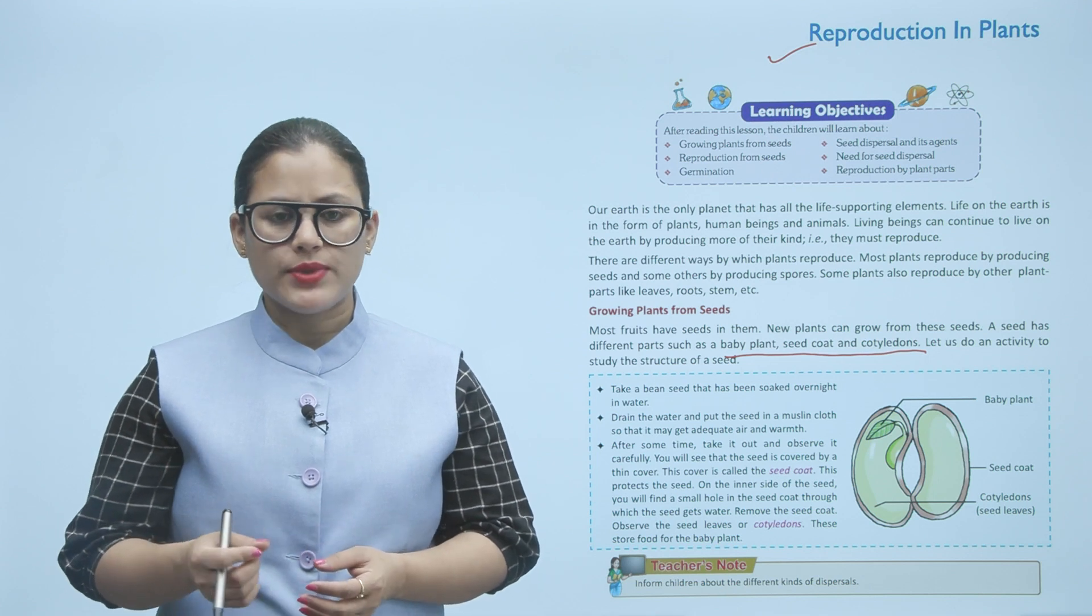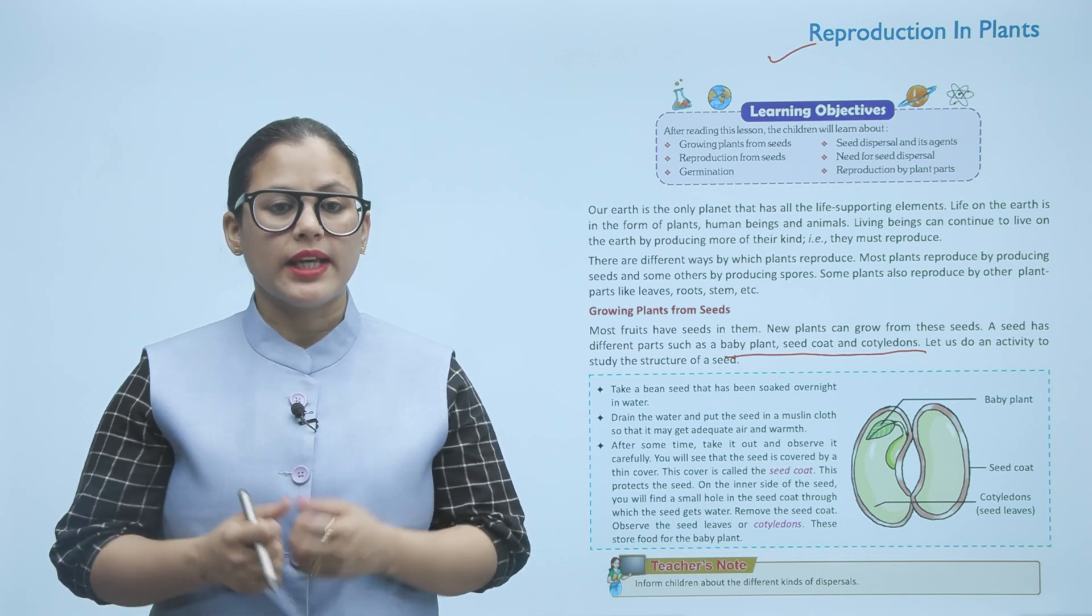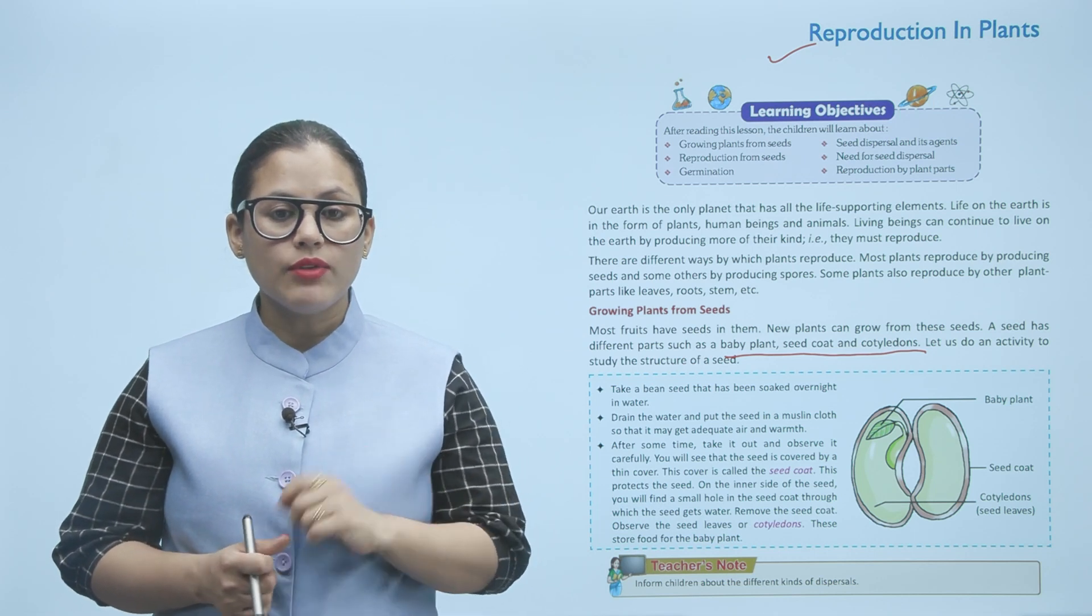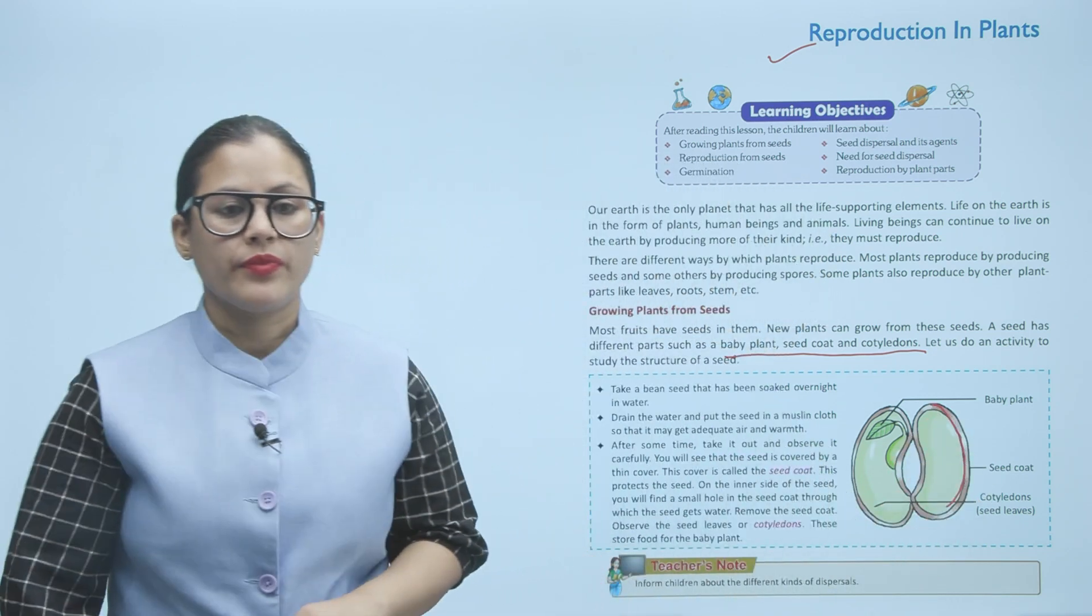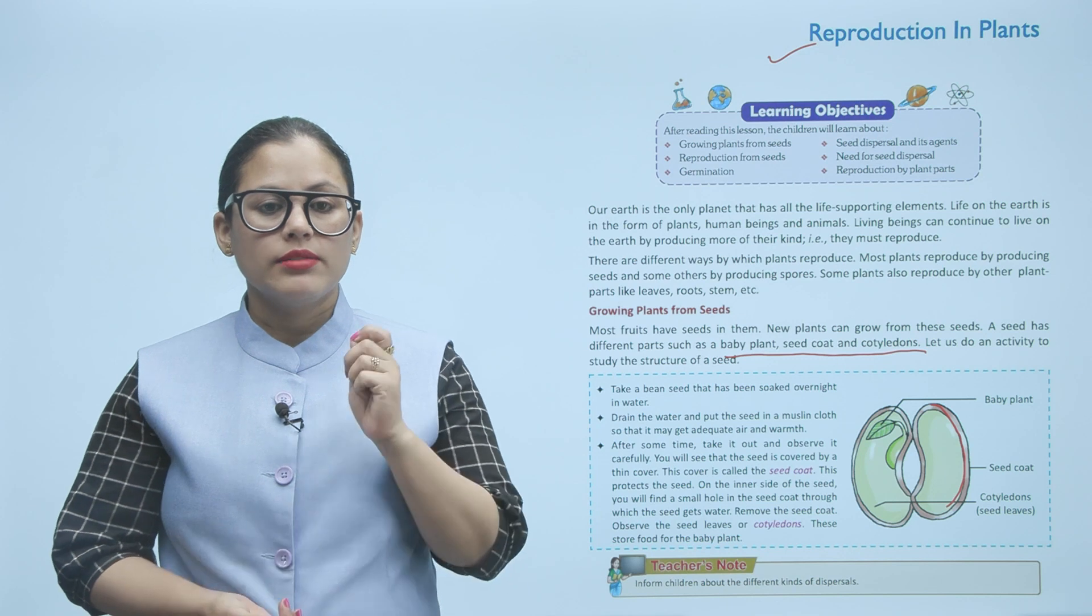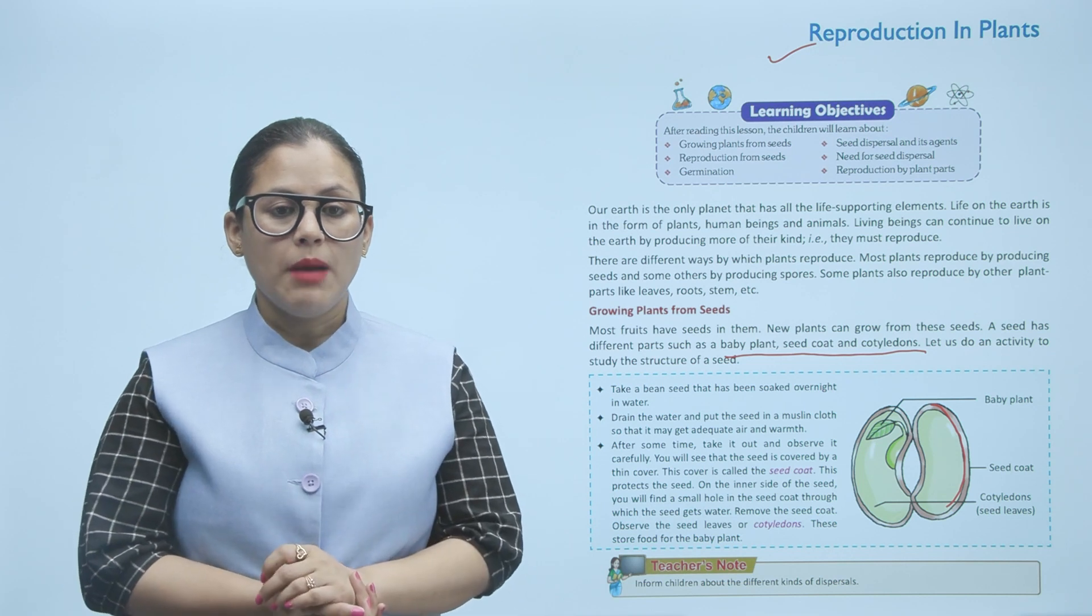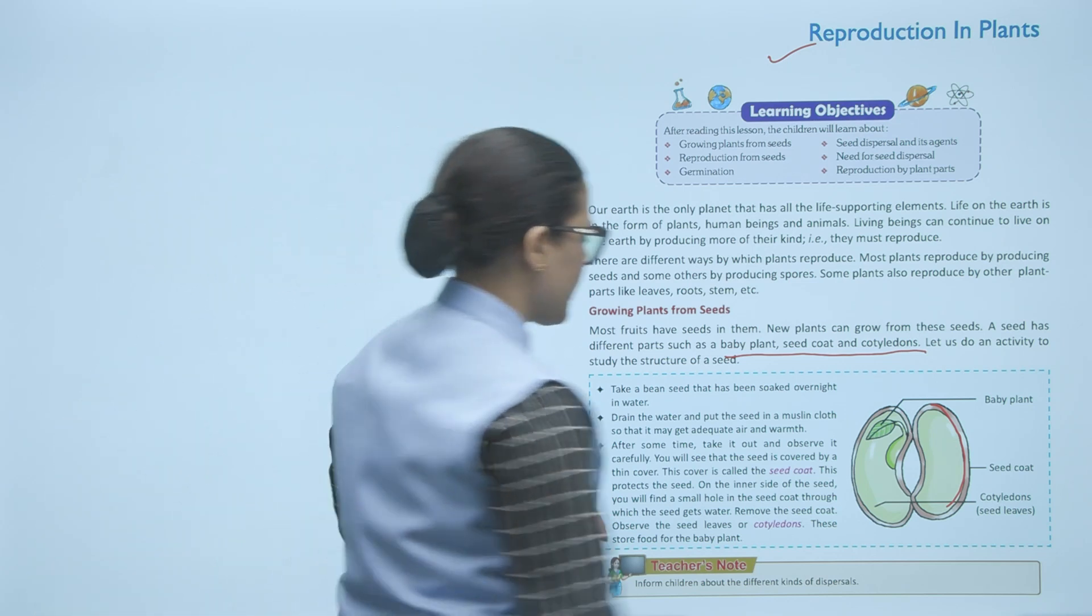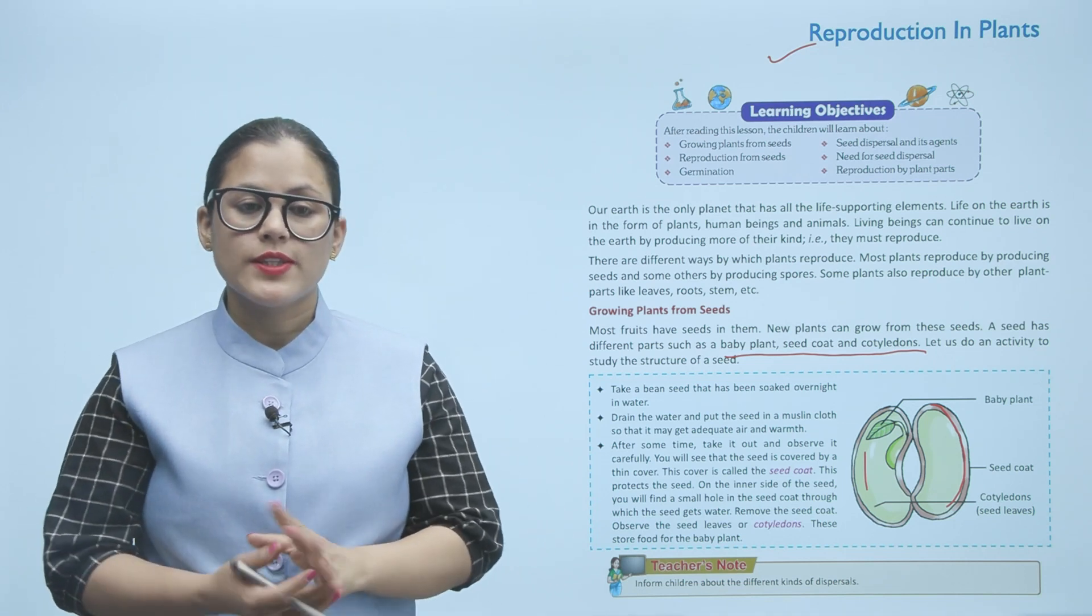On the inner side of the seed you will find a small hole in the seed coat through which the seed gets water. Remove the seed coat and observe the seed leaves or cotyledons. These store food for the baby plant.